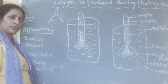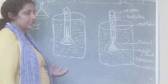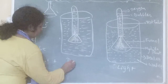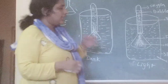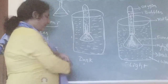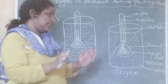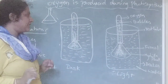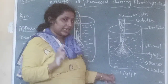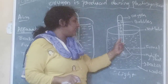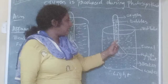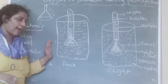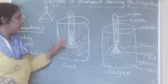Repeat the same apparatus setup. Keep one apparatus in the light and keep the other apparatus in the dark. After some time, what you will observe is that in the apparatus kept in the light, you will see some bubbles forming in the funnel and the test tube. But in the apparatus kept in the dark, there are no bubbles formed.